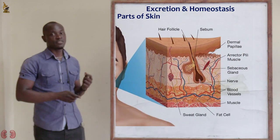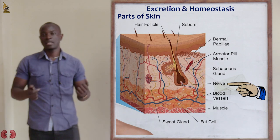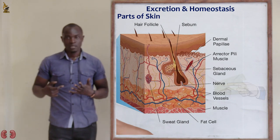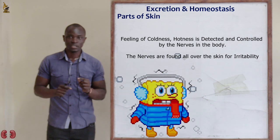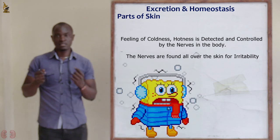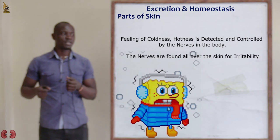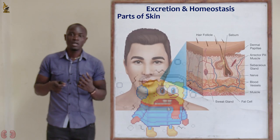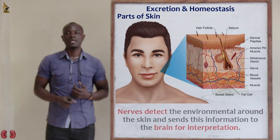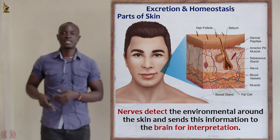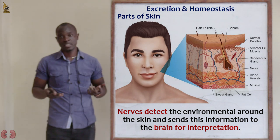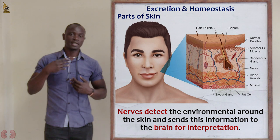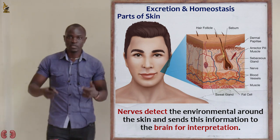The next part of the skin is the nerve endings. The function of nerve endings is irritability — to detect changes in the environment around the skin. If someone is feeling cold, the nerve endings detect this change. If someone has been pierced or is feeling pleasure, the nerve endings receive these stimuli and send signals to the brain to report whether the person is feeling pleasure, pain, or any form of pressure.